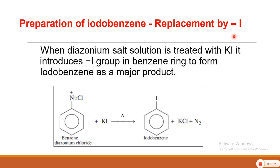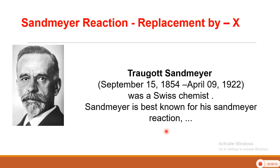Then there is a replacement reaction in which iodine replaces the N₂Cl group — this is called preparation of Iodobenzene. It is difficult to directly insert iodine into benzene, so the protocol is to convert the compound into a diazonium salt, which can then be used for these replacement reactions. When the diazonium salt solution is treated with potassium iodide, iodine is introduced into the benzene ring to form Iodobenzene as the major product. The reaction is carried out with potassium iodide and as usual nitrogen gas is also eliminated.